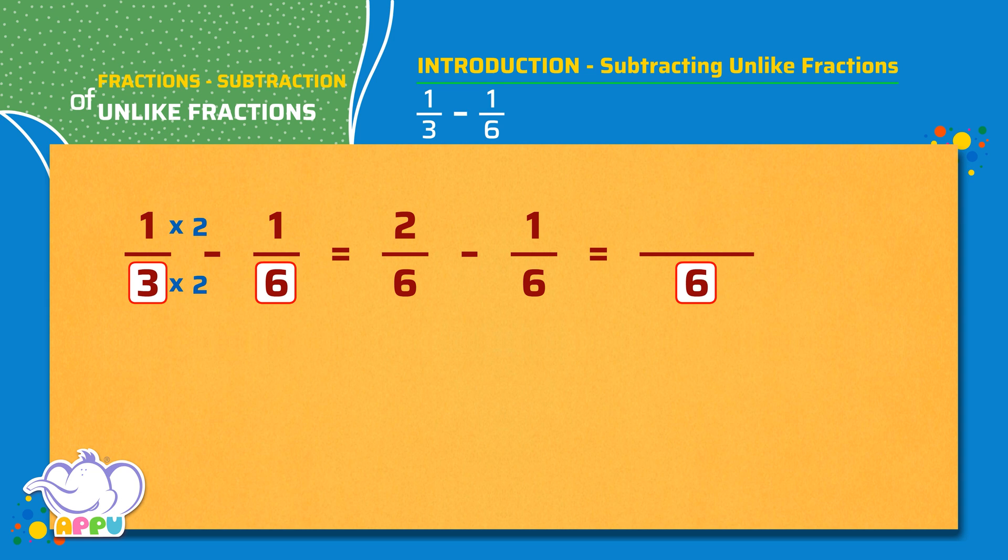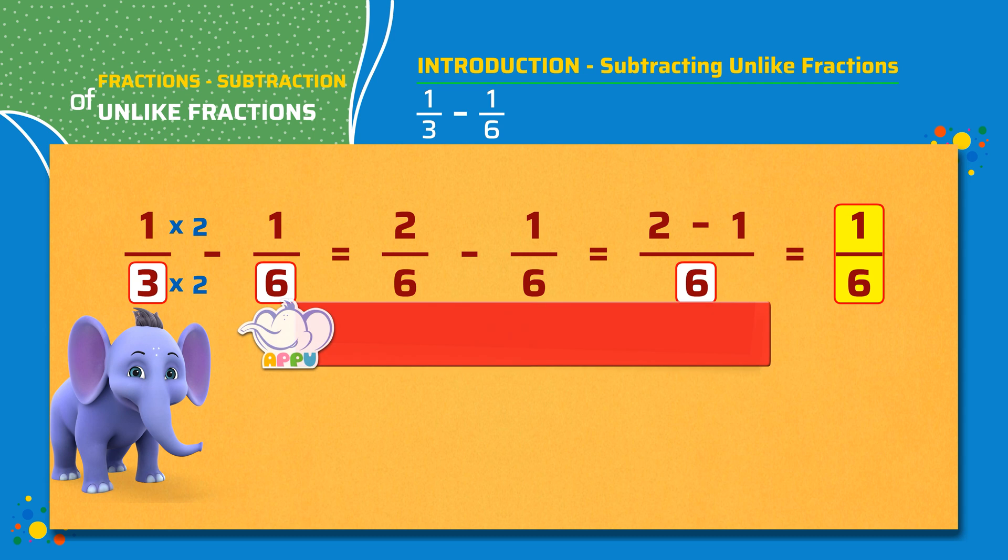And we subtract the numerators. 2 minus 1 equals 1. The answer is 1 by 6. Whenever we subtract 2 fractions, we have to make the denominators same.